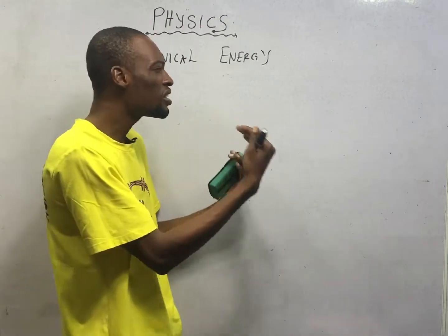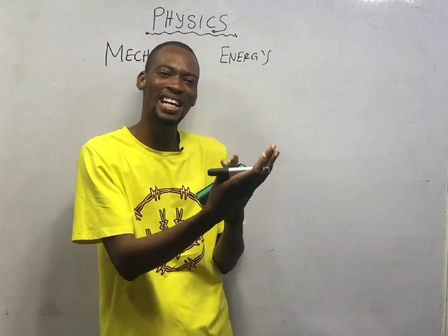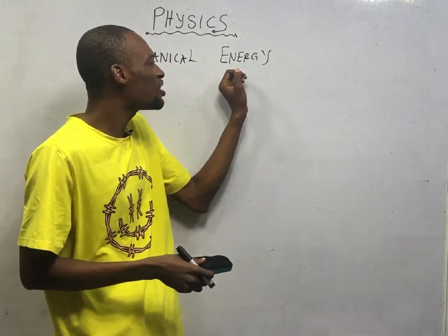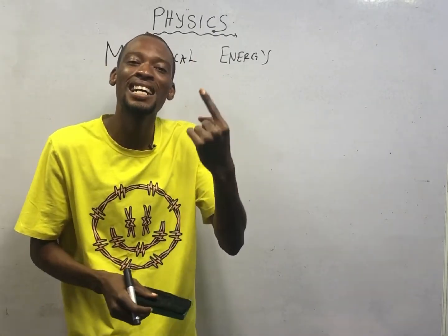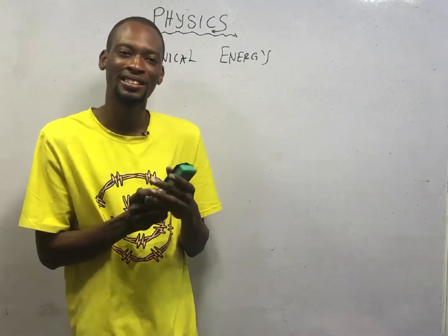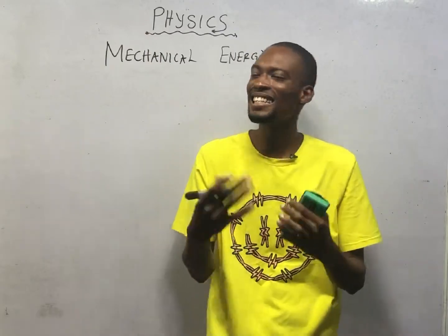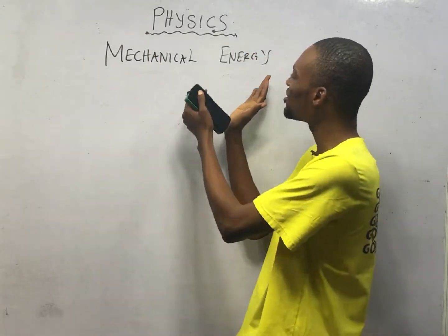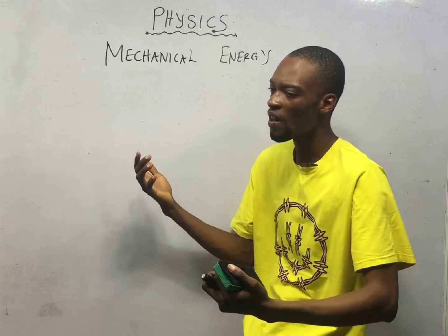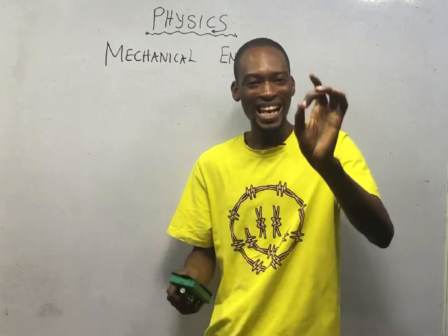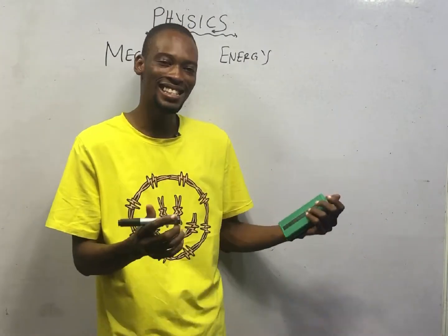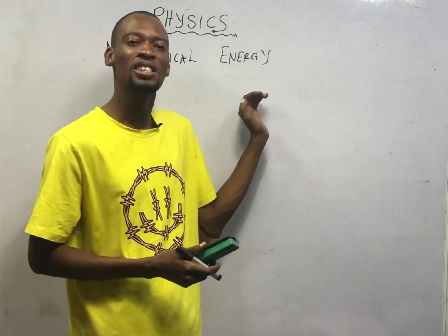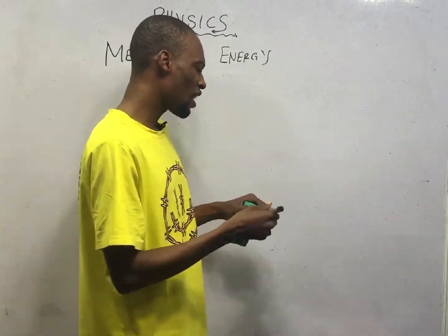The universe is made up of matter and energy. Energy is usually referred to as antimatter. While matter is anything that has mass and occupies space, energy is otherwise. Energy is the ability or capacity to do work.